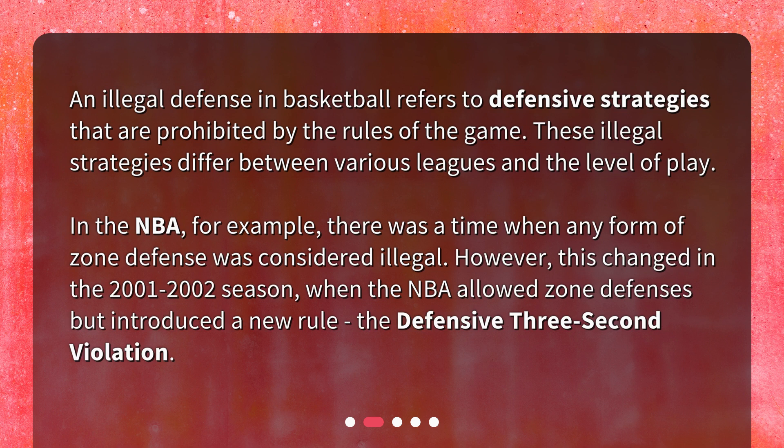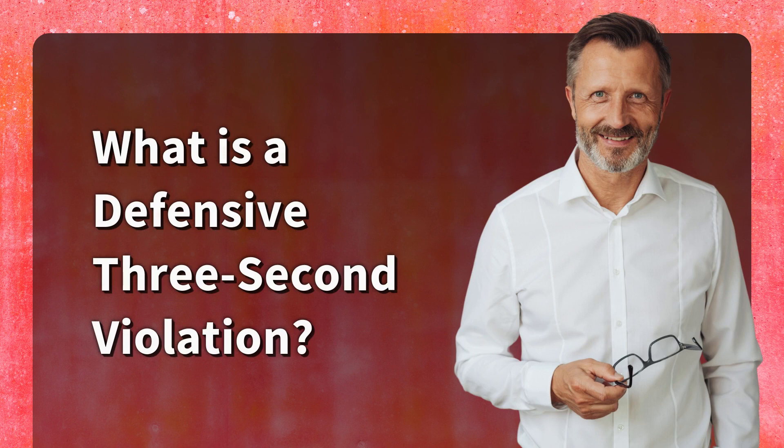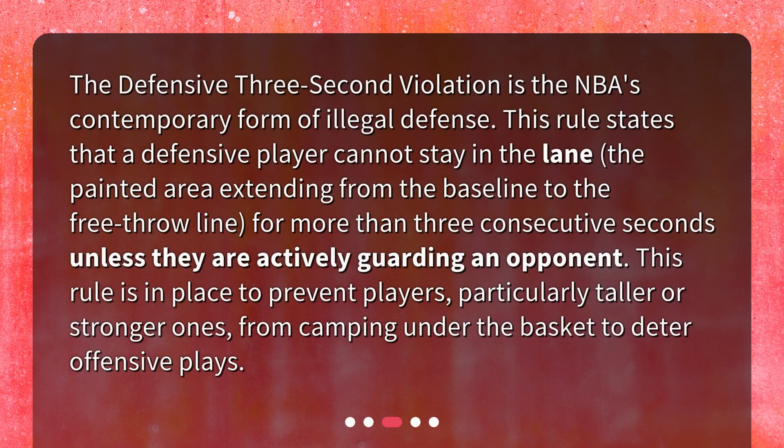However, this changed in the 2001-2002 season, when the NBA allowed zone defenses but introduced a new rule, the defensive three-second violation. The defensive three-second violation is the NBA's contemporary form of illegal defense. This rule states that a defensive player cannot stay in the lane — the painted area extending from the baseline to the free throw line — for more than three consecutive seconds unless they are actively guarding an opponent. This rule is in place to prevent players, particularly taller or stronger ones, from camping under the basket to deter offensive plays.